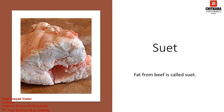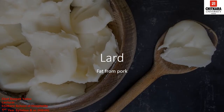Fat from beef is called suet. Due to its stability it used to be a very common ingredient for short crust pies and other products, but butter has majorly replaced all the natural saturated animal fats. Lard is the fat from pork and is commonly used in cooking and baking. With more awareness of health, the use of lard and other natural animal fats is restricted to special dishes only. Animal fats are rendered before using. Rendering is the process where the fats are heated on low heat to remove the non-fatty membranes.